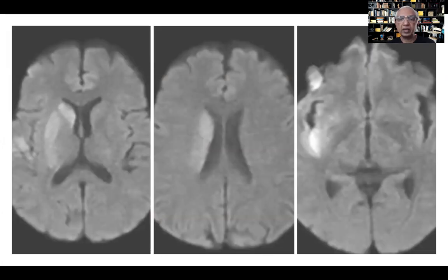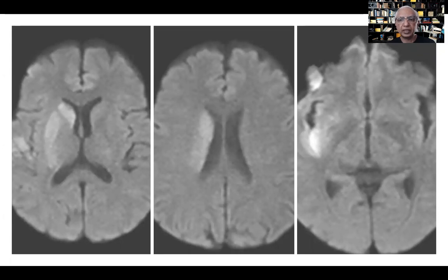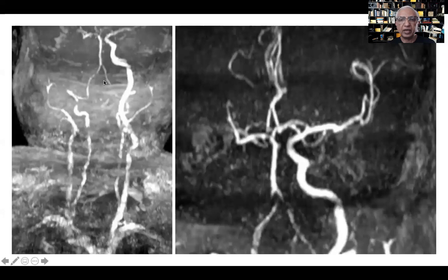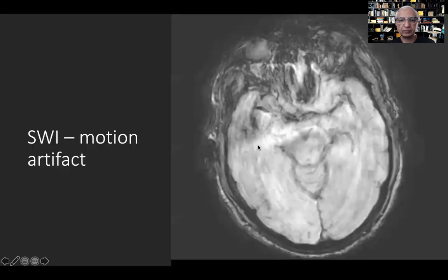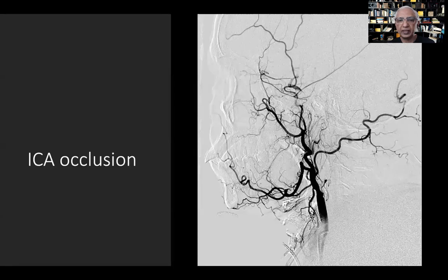We start with MR and see diffusion restriction along the lentiform nucleus with the internal capsule spared, some changes in the caudate nucleus and insular cortex, all on the right side. The ASPECT score is within limits and none of these are eloquent areas. The MR angio shows the ICA occluded from the origin on the right side, with the ACA filling from the opposite side but no MCA filling. There is a little streak of contrast beyond the occlusion with nothing seen distally.